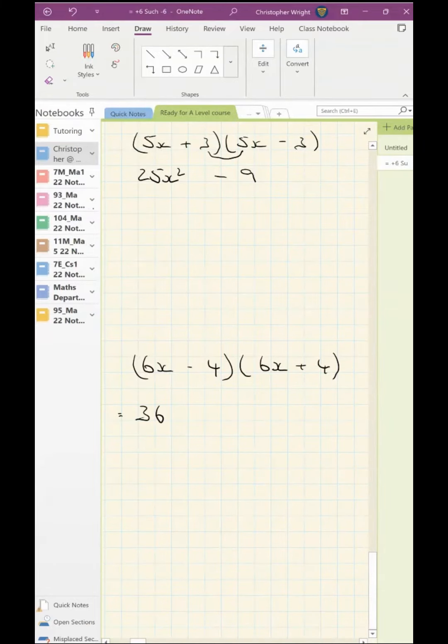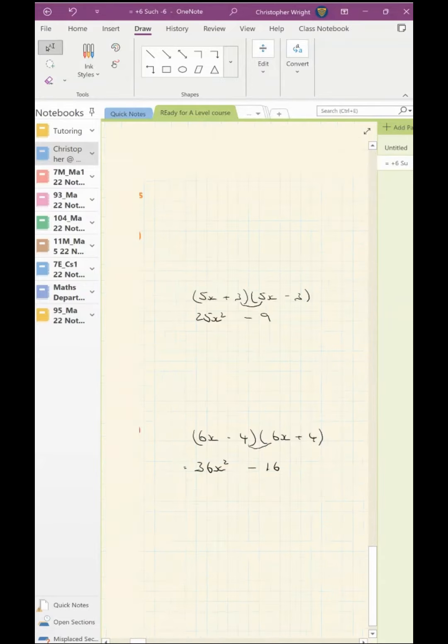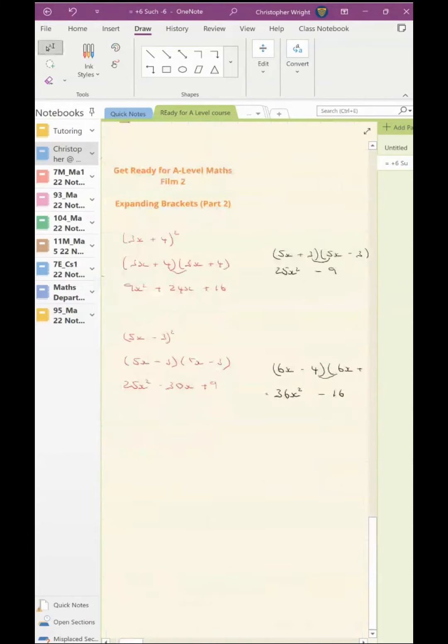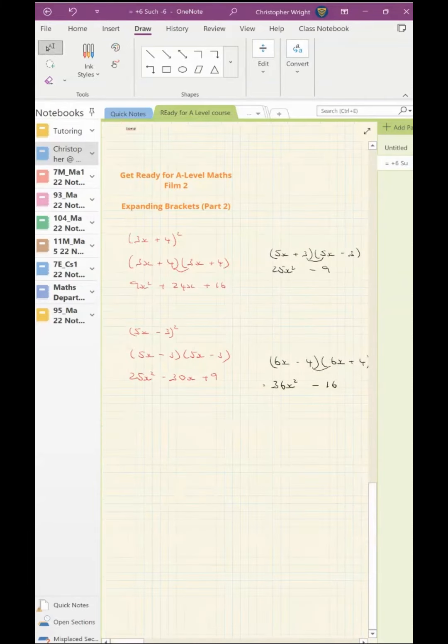I'm going to have 36x squared minus 16. Again, the x term disappears because I have minus 24x and then plus 24x. So those are my two special cases for expanding brackets, and you need to be dead familiar with those before you start your A-level maths.